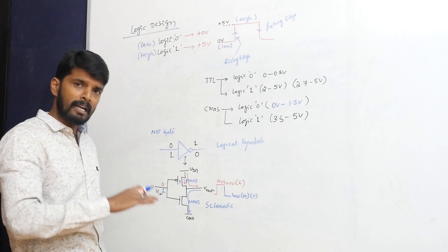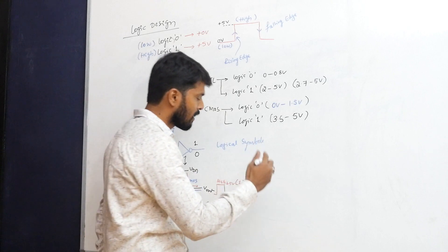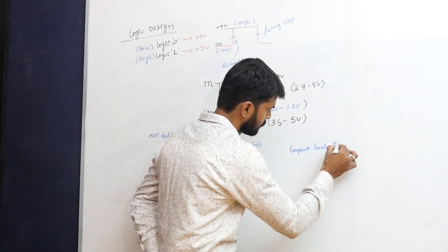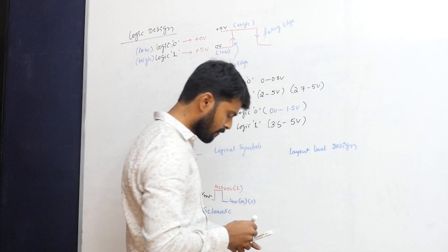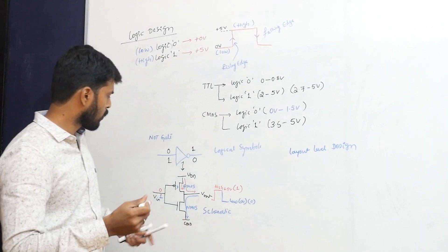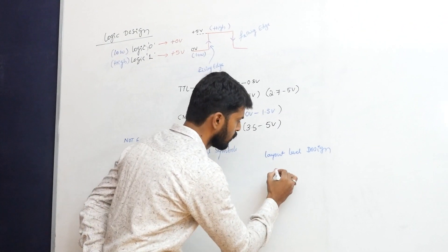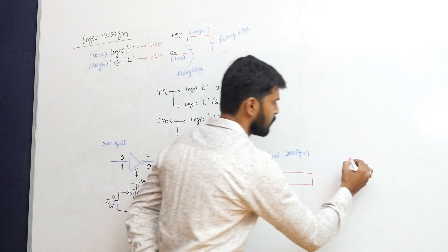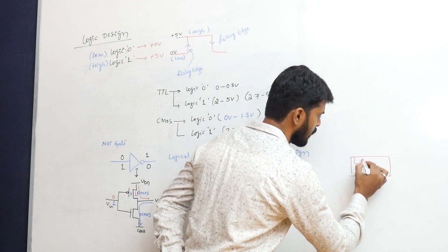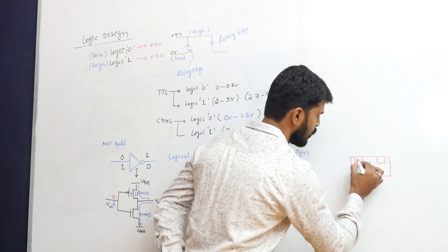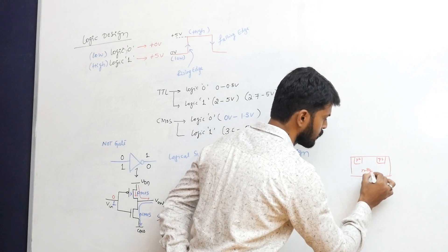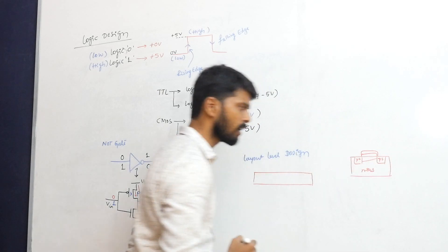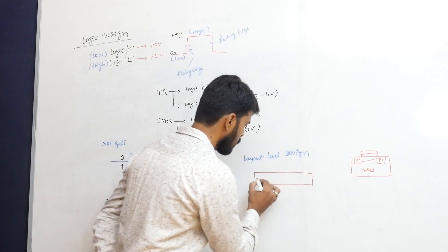Going one more level down from schematic, we reach layout level design. To construct the inverter layout, we start with the PMOS structure: it has two P-diffusion regions, one N-substrate, an insulator, and a gate. This physical geometrical structure is what actually sits inside the integrated circuit.